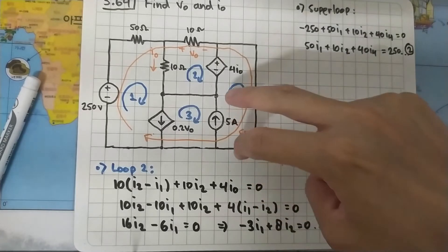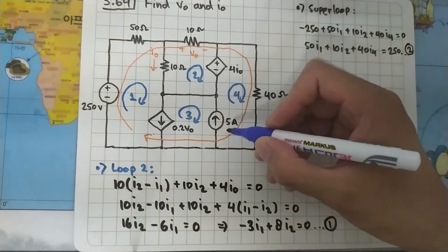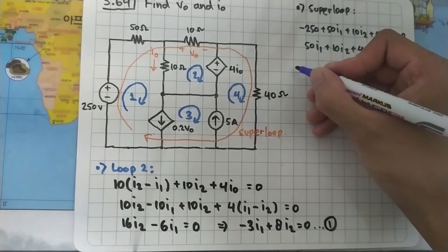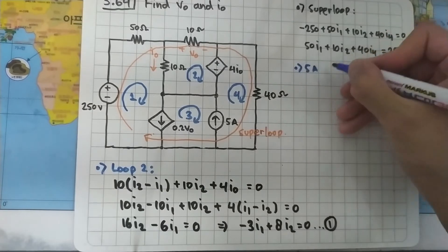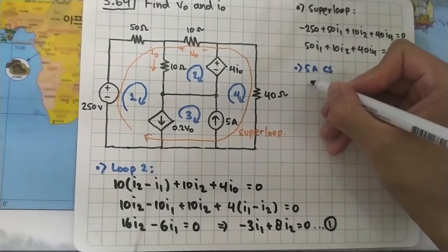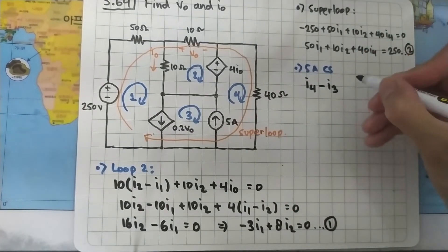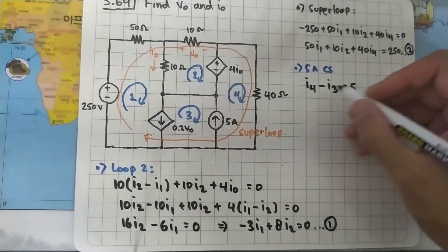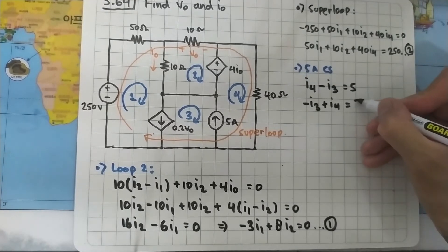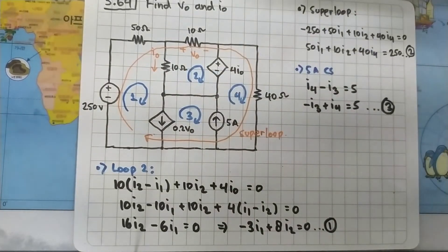Now we look at the 5-ampere current source. The current in the same direction is I4 and the opposite direction is I3, so: I4 minus I3 equals 5, or rewriting: minus I3 plus I4 equals 5. Save this as equation number 3.